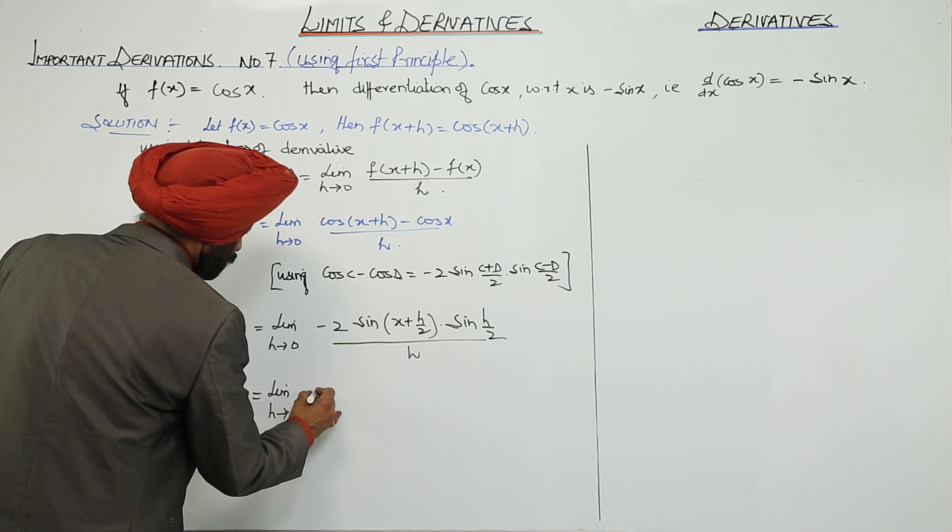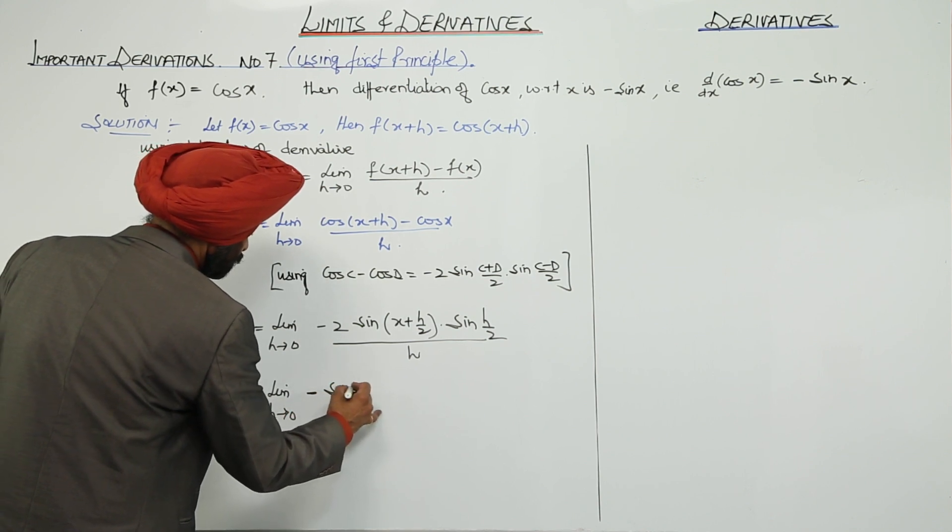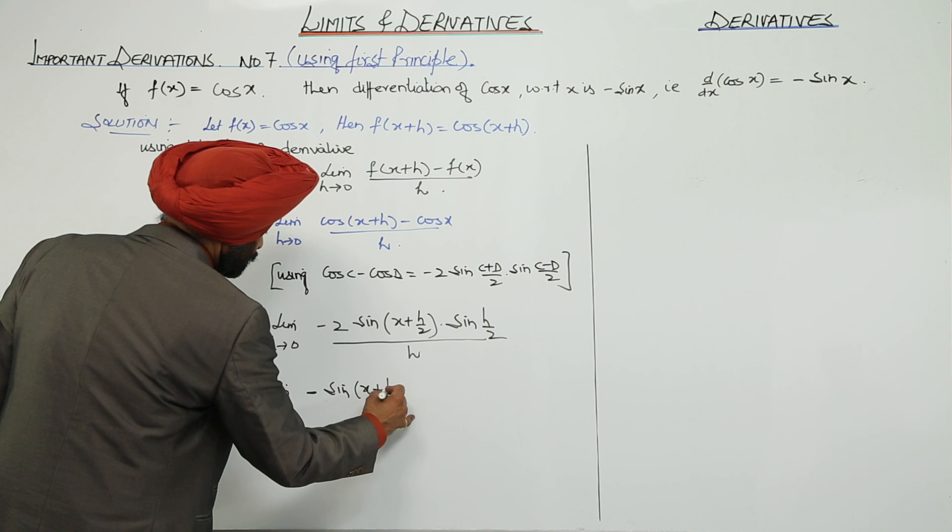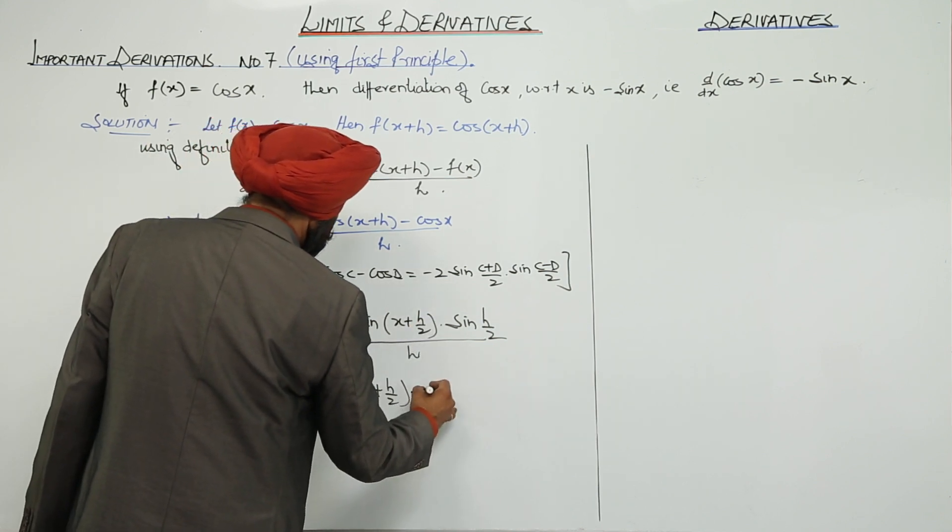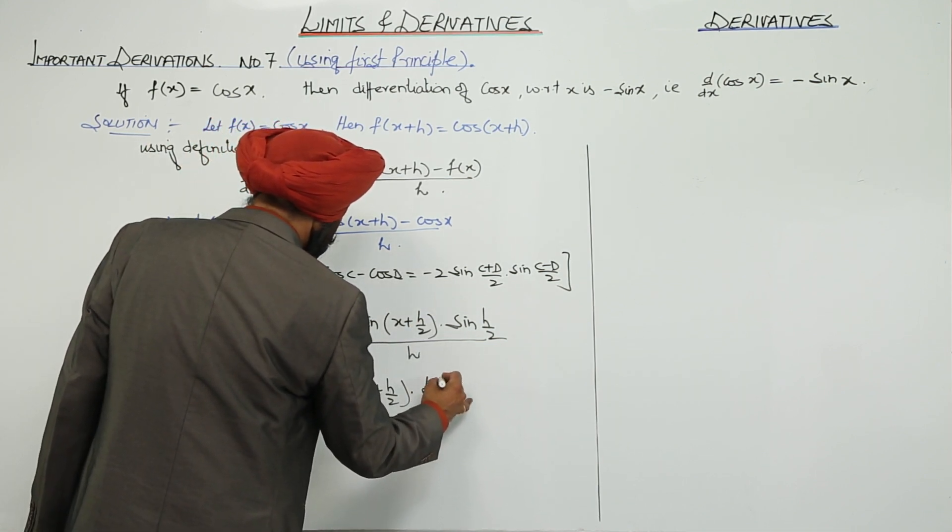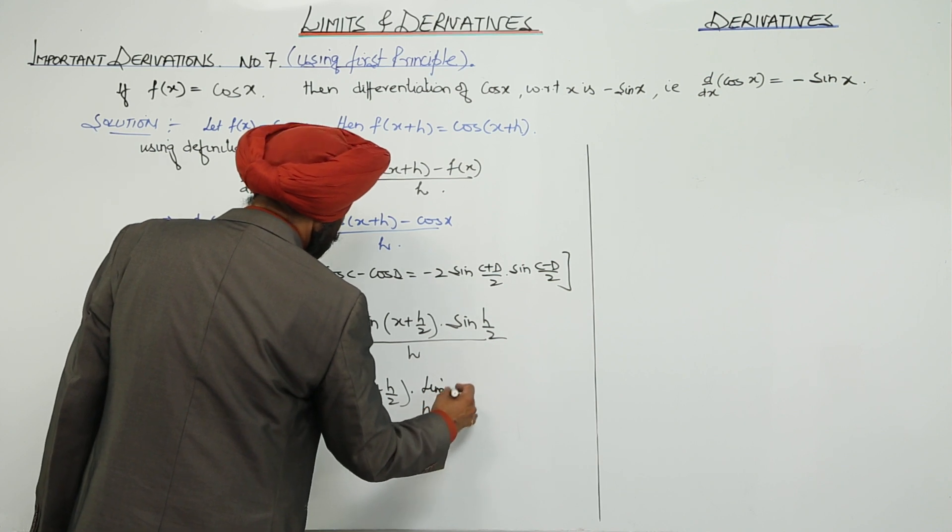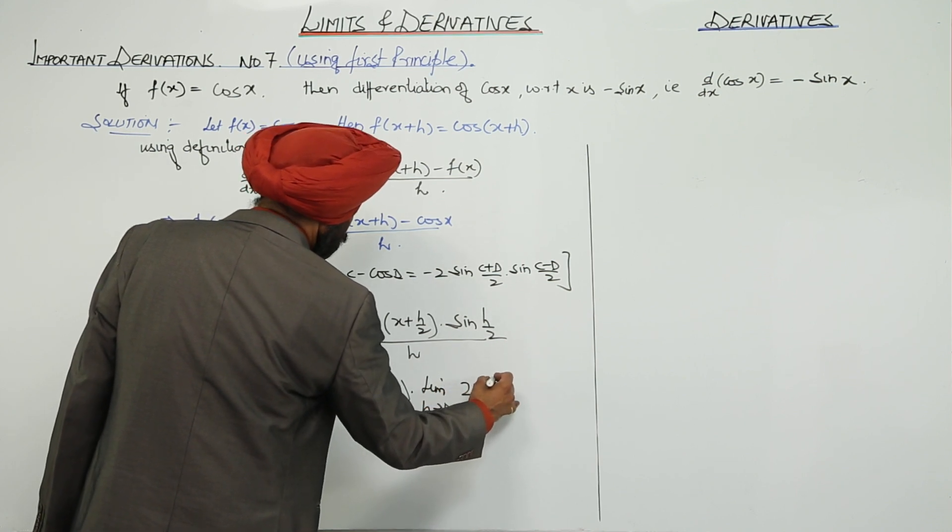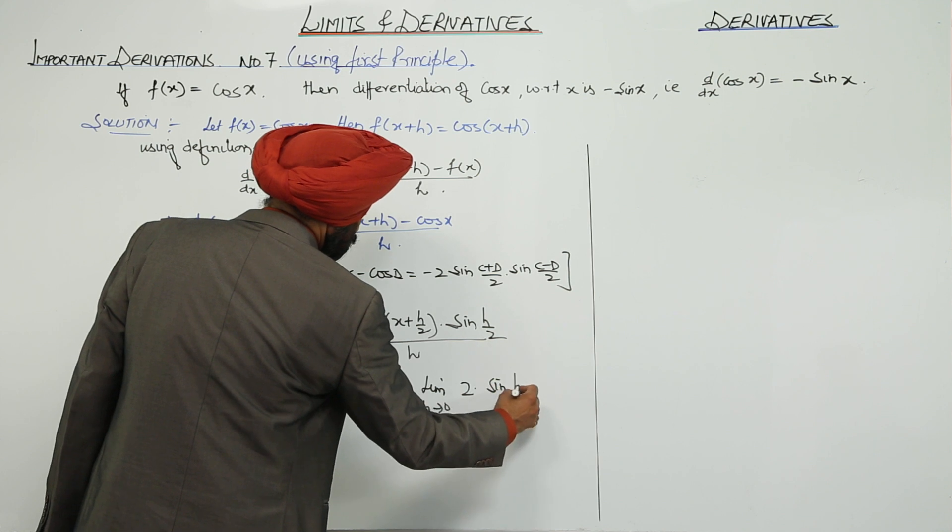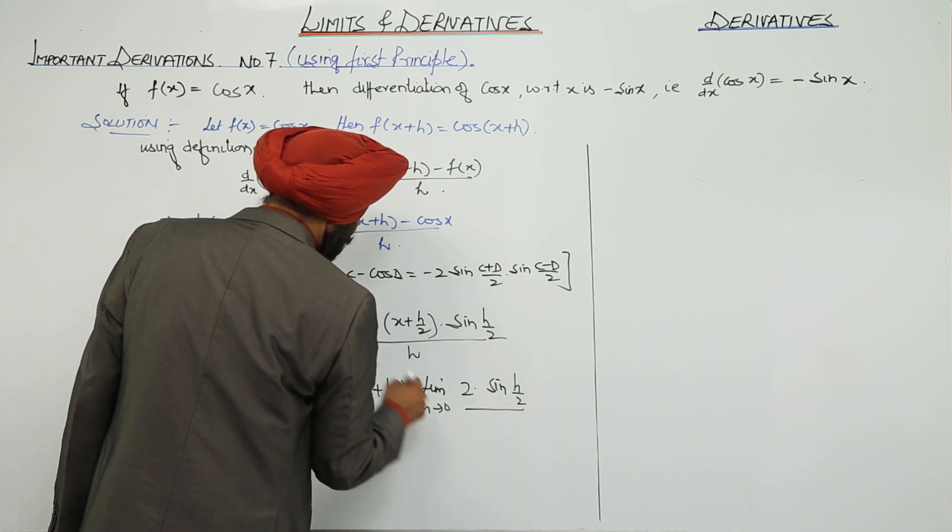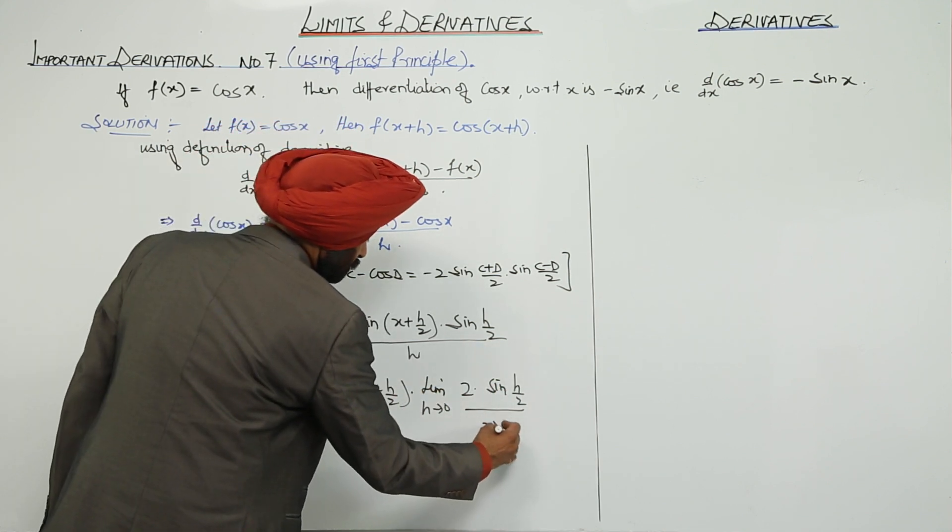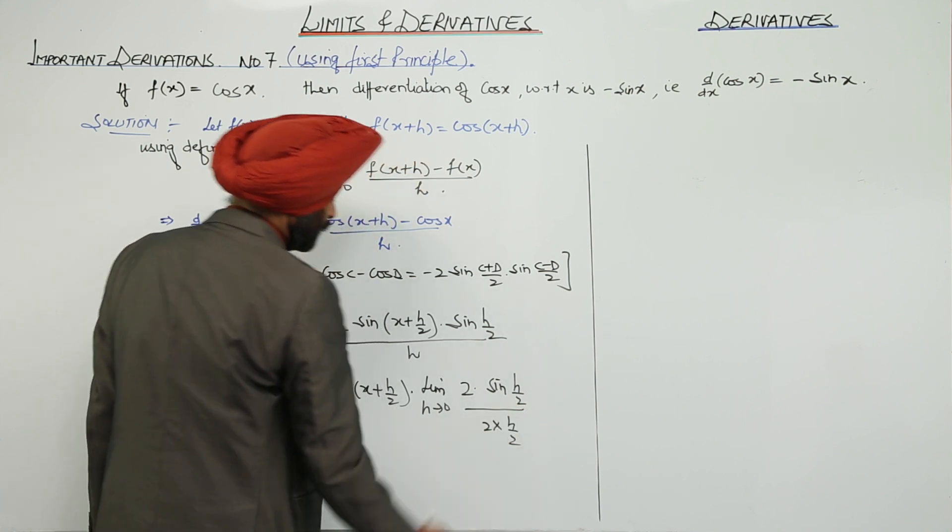So, we can write it negative of sin(x + h/2) times limit h approaches to 0, 2 sin(h/2) and this h now, h by 2.